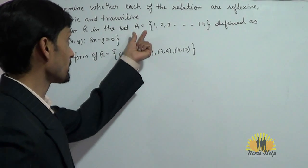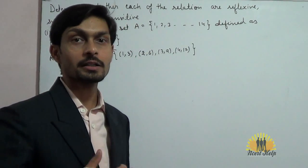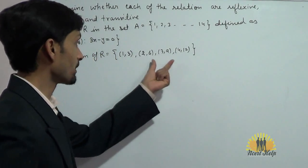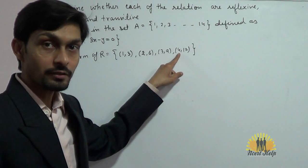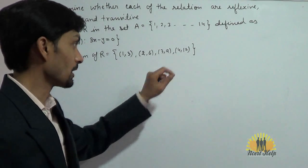In a relation, both elements must belong to A. If R is defined on A, then both elements must belong to A. It means if we take x equals 5, y will become 15, which cannot be in the relation.